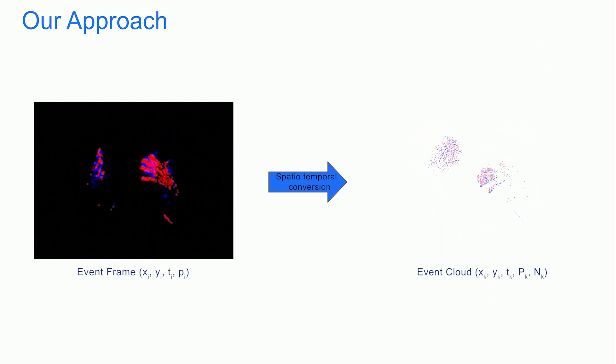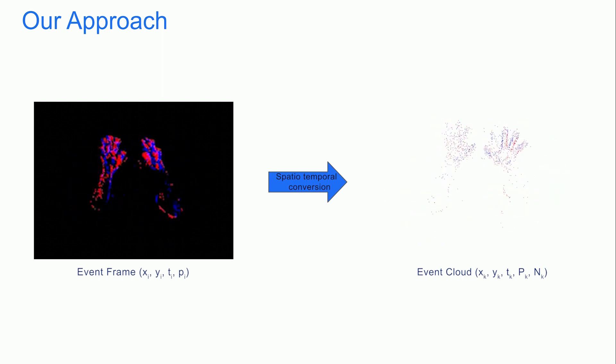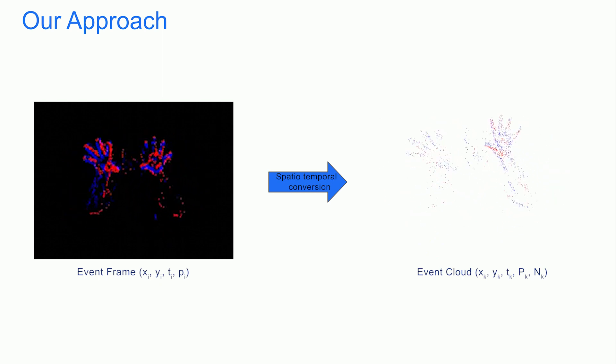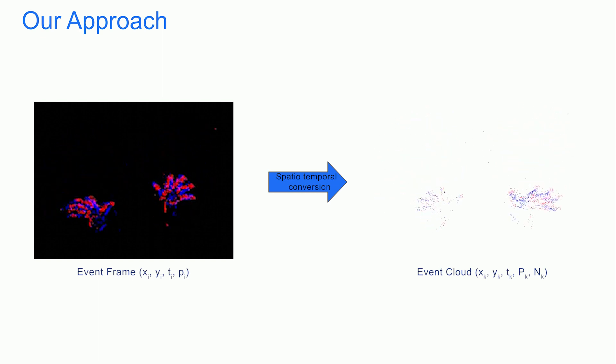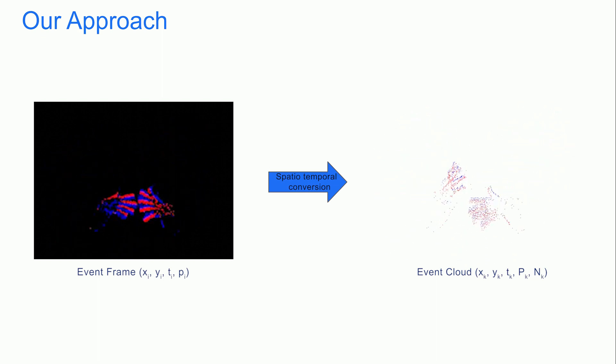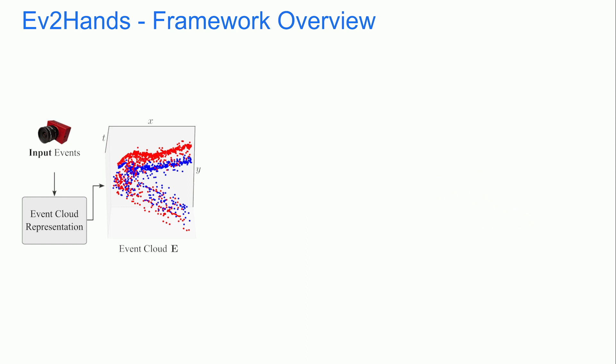We convert the input event stream into an event cloud by slicing the events across time. In an event cloud, events are represented as space-time event points, each of which holding the number of positive and negative events fired at the corresponding pixel. The event cloud is input to our Ev2Hands framework.